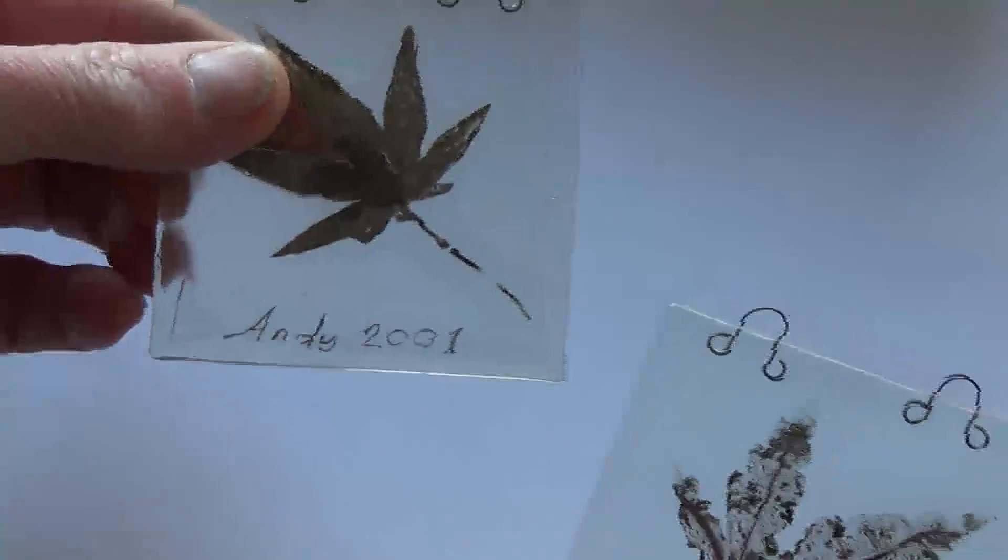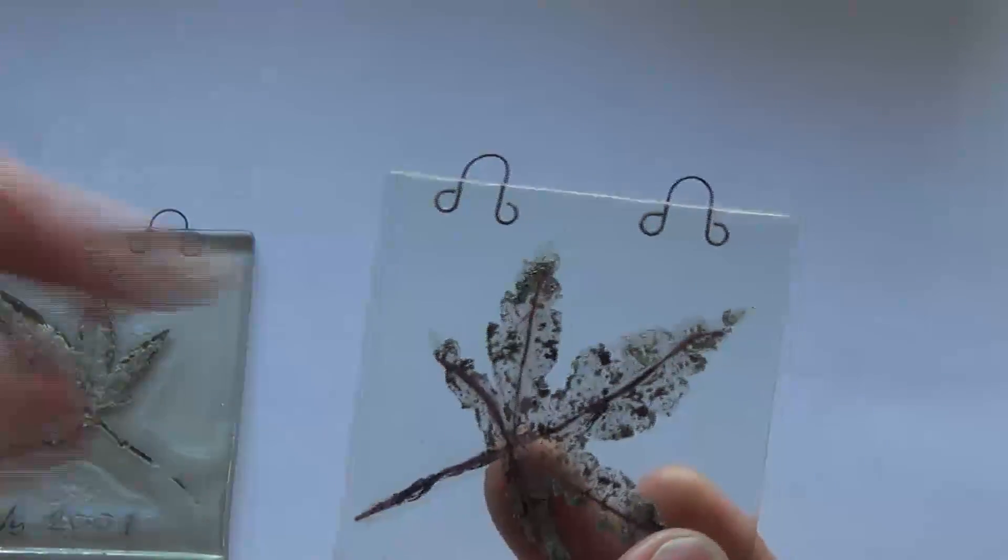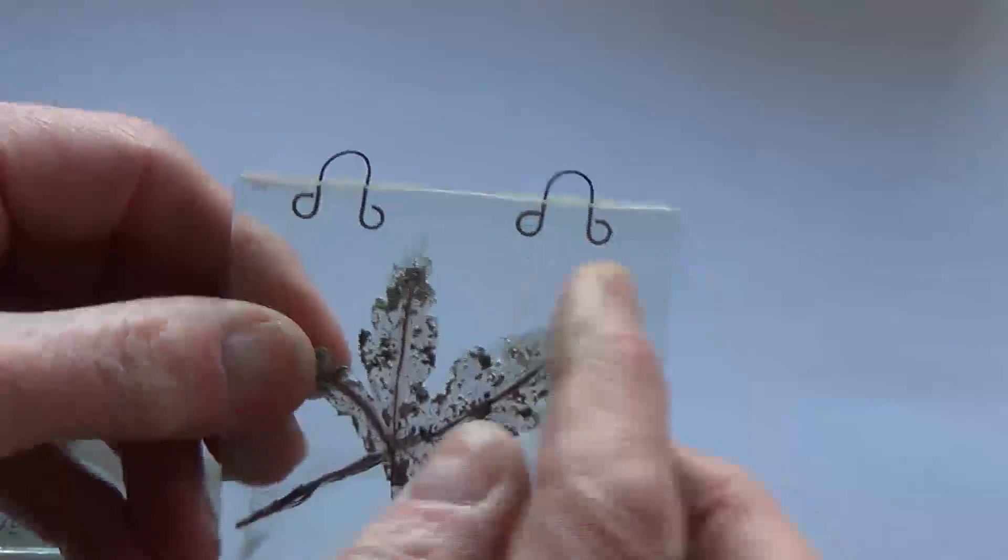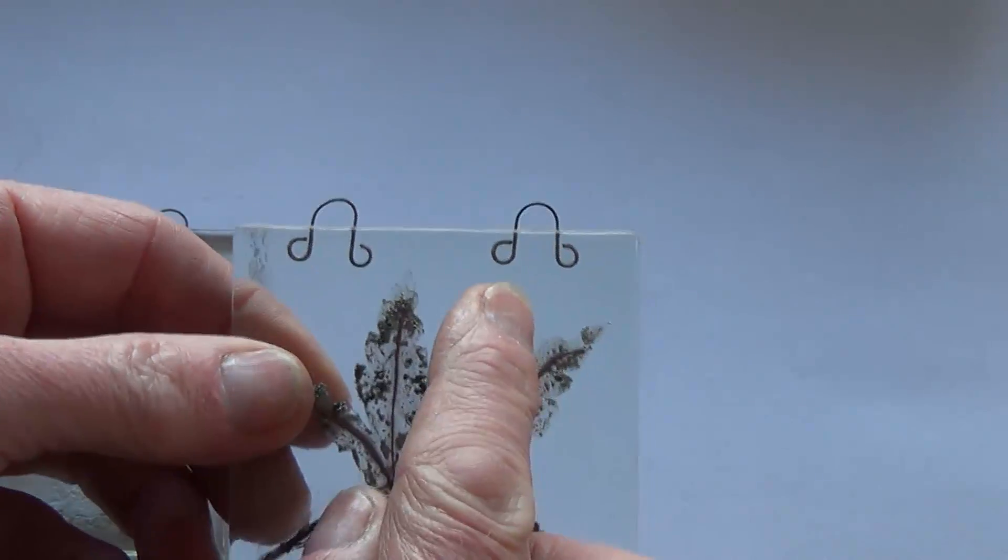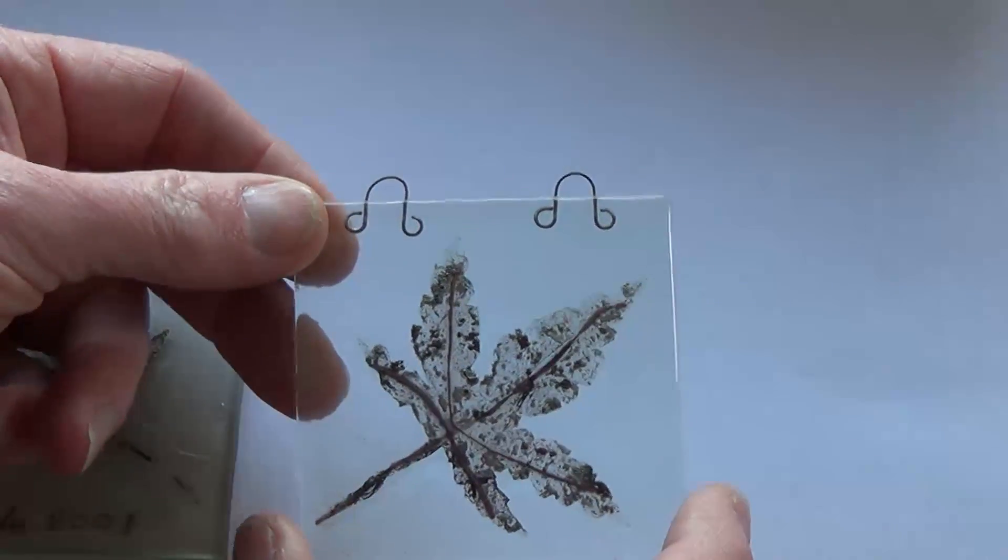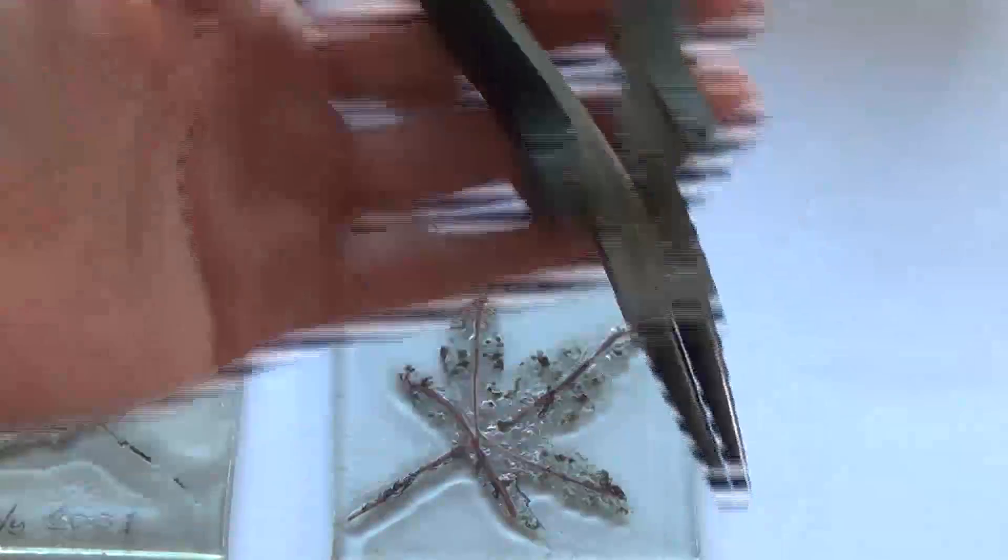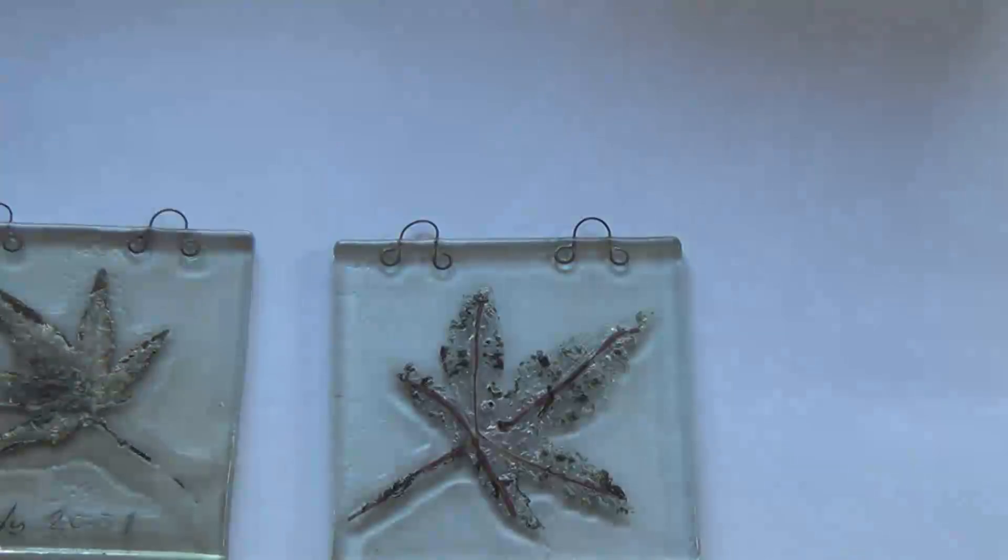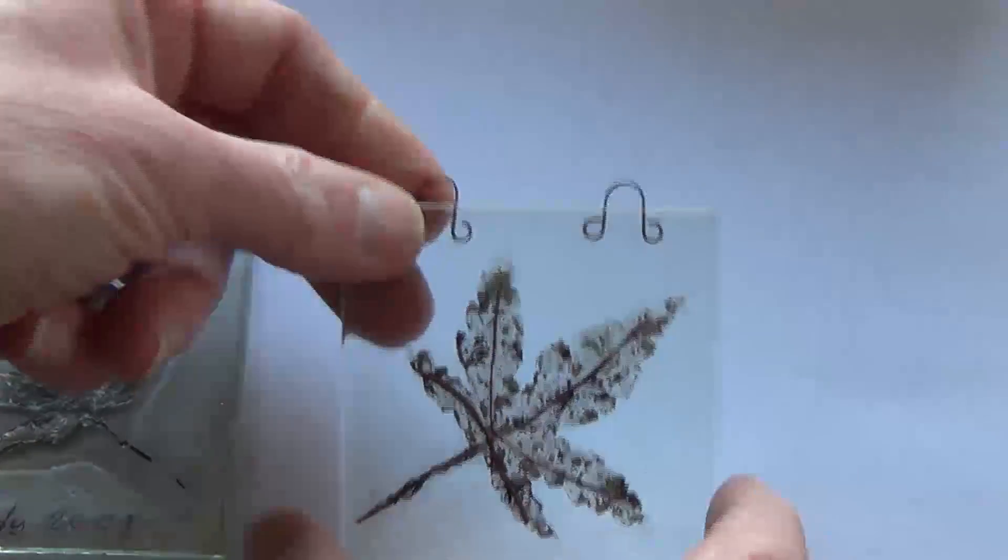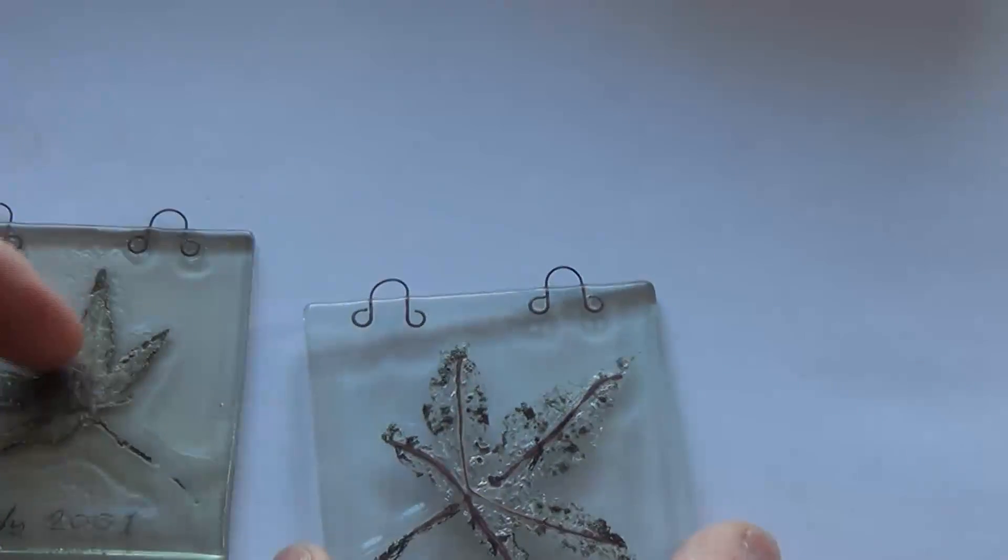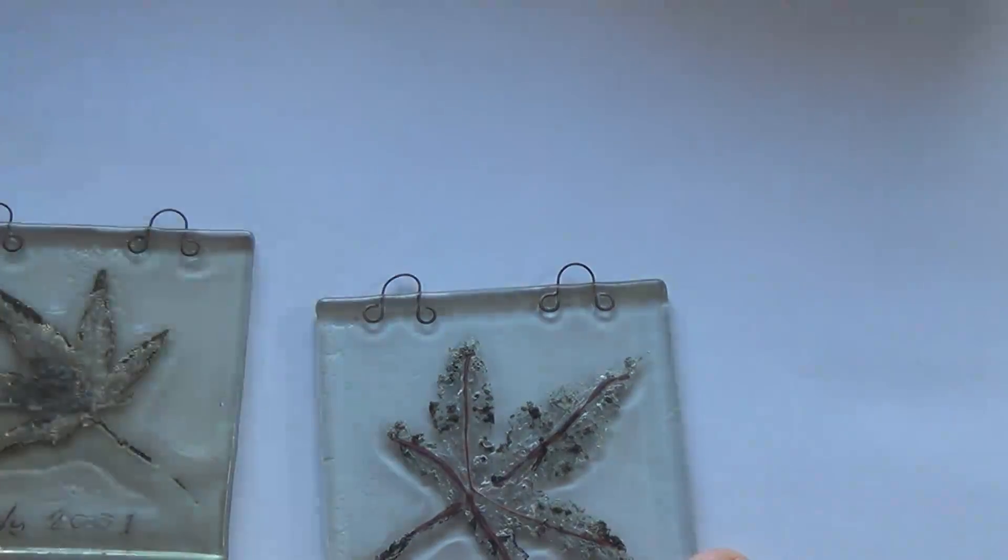It says there Andy 2001, not very clear on that one, a little clearer there. These wires that suspend the panel, that's a little bit of nichrome wire, the sort of wire you get from an electric fire bar. I just shaped those with a pair of round nose pliers, and then just sandwiched it between the two sheets of glass.